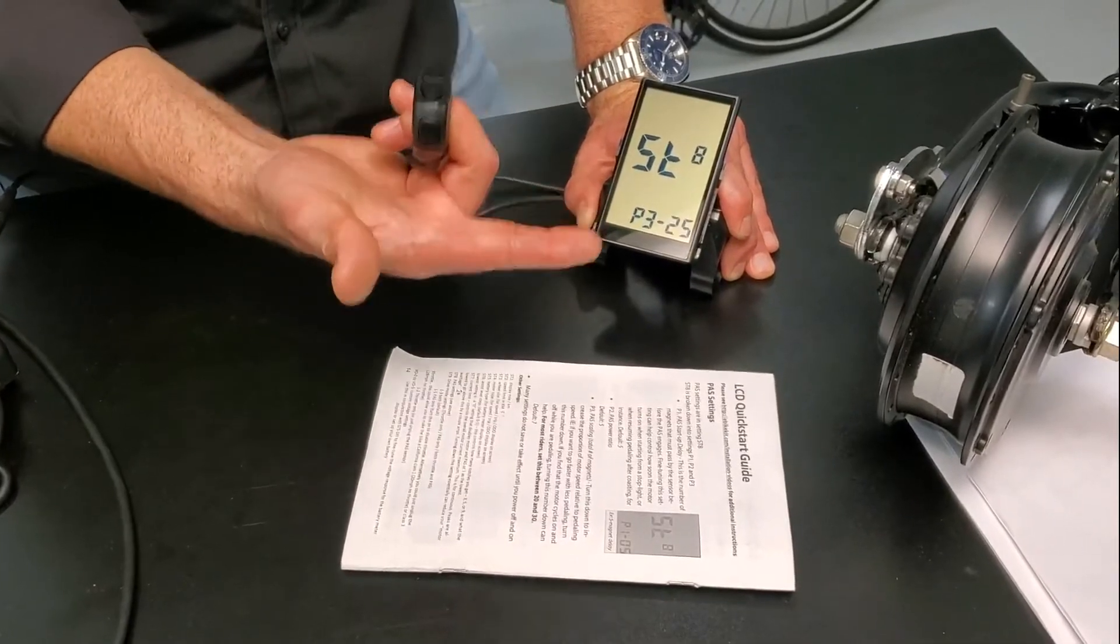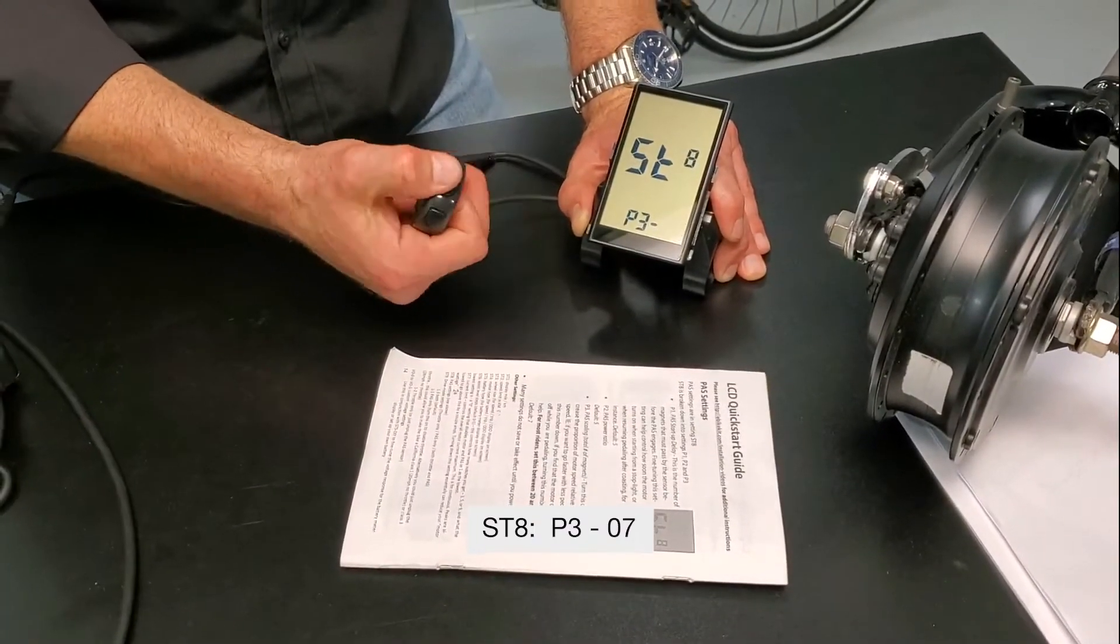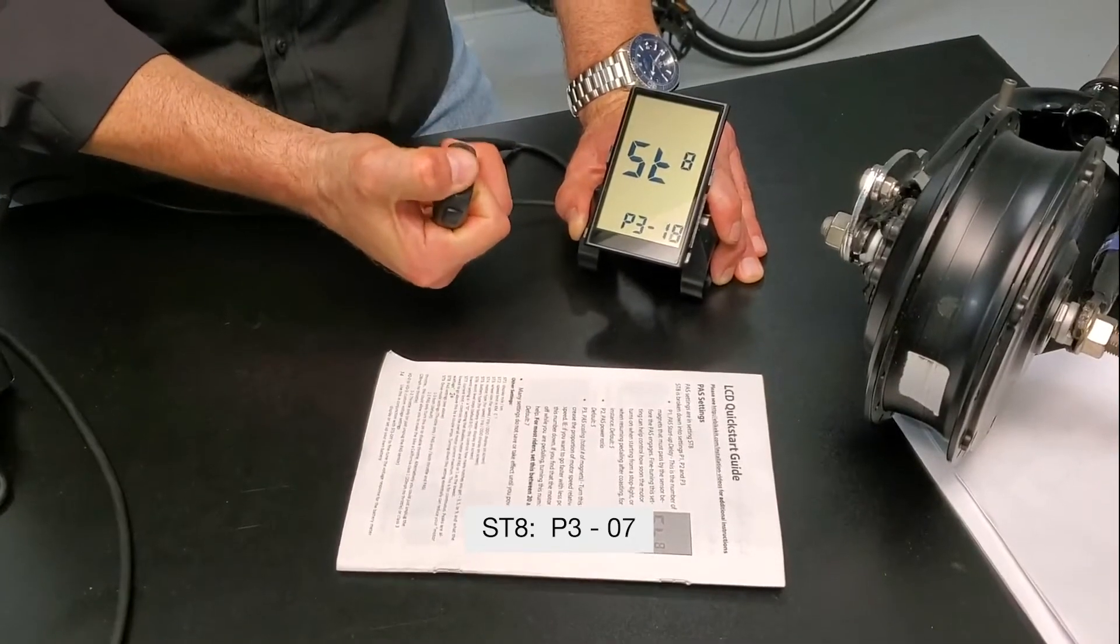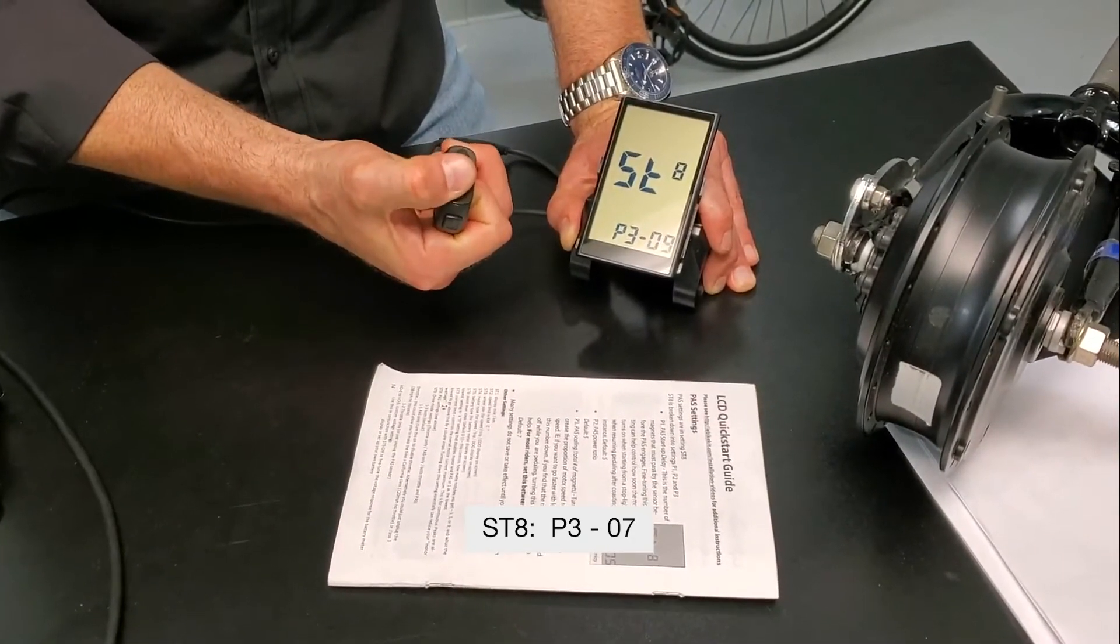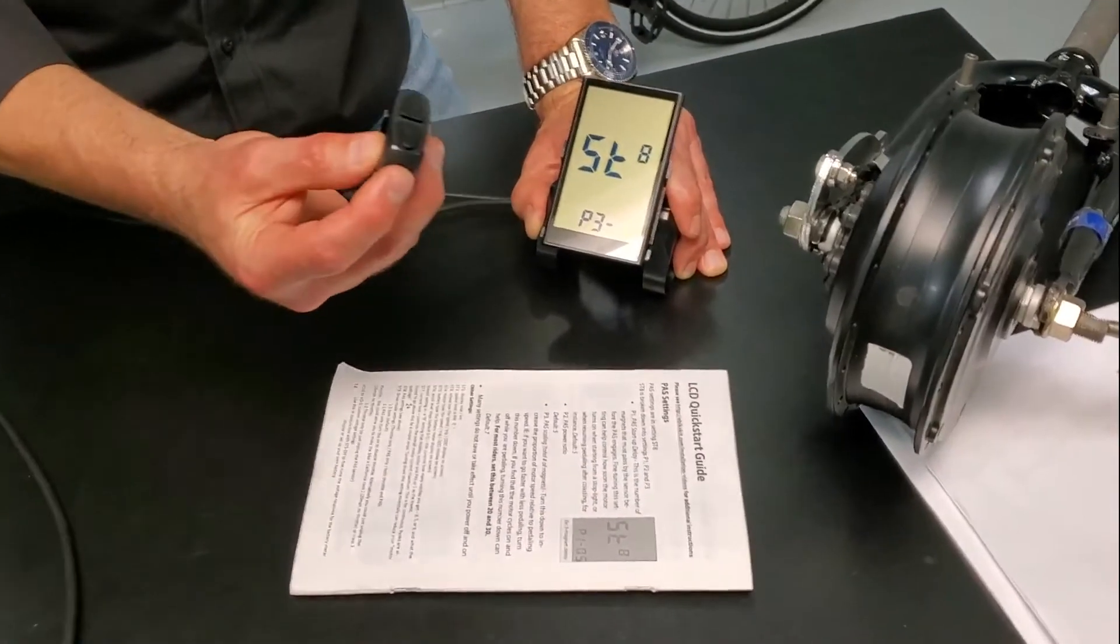We're going to click M again and we get to P3 25. Here's where I want you to make a change. I want you to take this down to 7. No matter what you had it on, I want you to take it to 7. And then you're going to click M again.